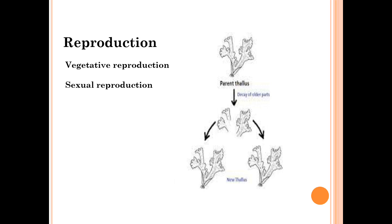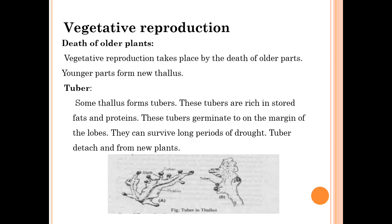There are two types of reproduction in Anthoceros: vegetative reproduction and sexual reproduction. Vegetative reproduction takes place by the death of older parts, and the younger parts form a new thallus.